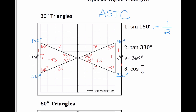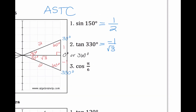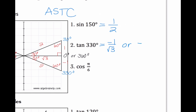Our next problem is tangent of 330. Here's 330, so my reference angle is 30 degrees. Tangent is opposite over adjacent. So I'm going to write the opposite over the adjacent. We could also think of this as negative radical 3 over 3. Honestly, I would accept either answer. We tend to see this answer more often, but I want to stress that the other one is also correct.